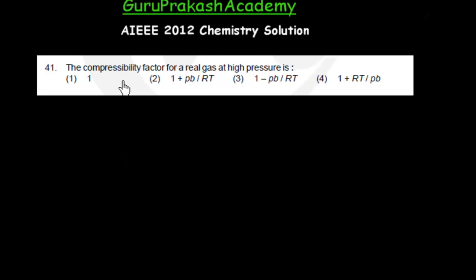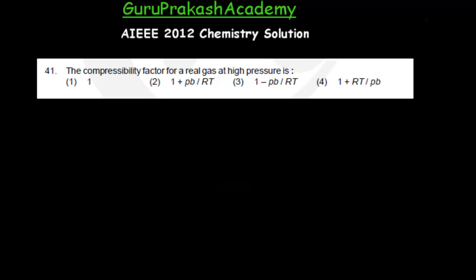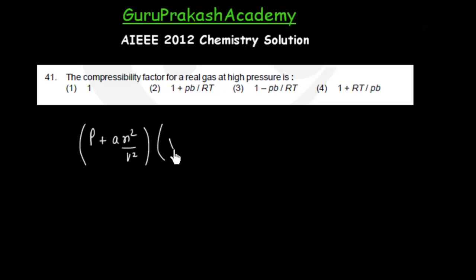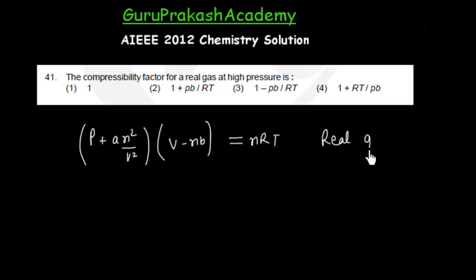This question is from the van der Waals gas equation — every year a question comes from this topic. The van der Waals equation is: (P + an²/V²)(V − nb) = nRT. This equation is valid for real gases.